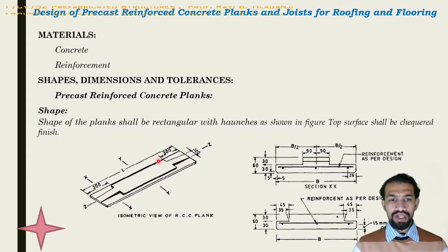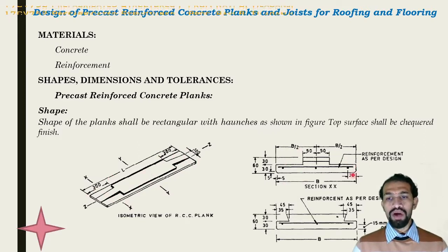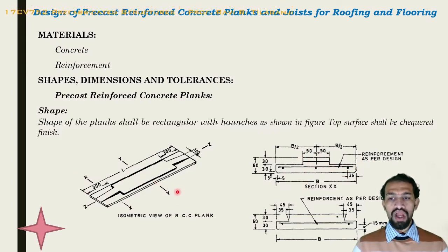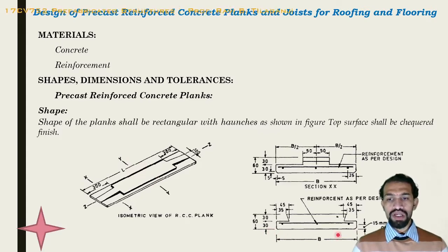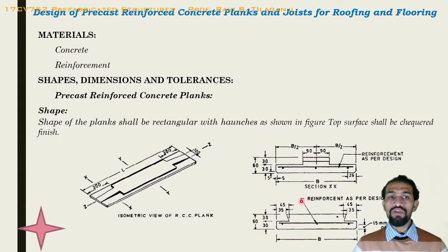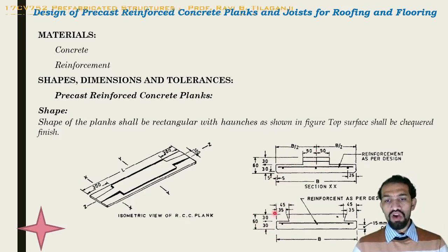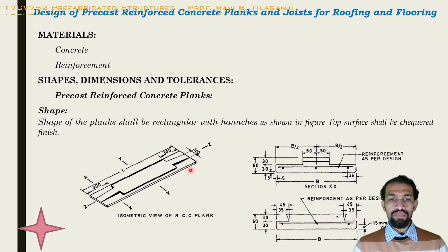In an isometric view we are able to see this particular format. In the sectional view XX we can see the reinforcement arrangement, and at section YY the reinforcement is provided in this particular way. This is the roof covering for slabs wherein the interlocking system is placed with the concrete — one of the pre-cast concrete planks used as roofing material.